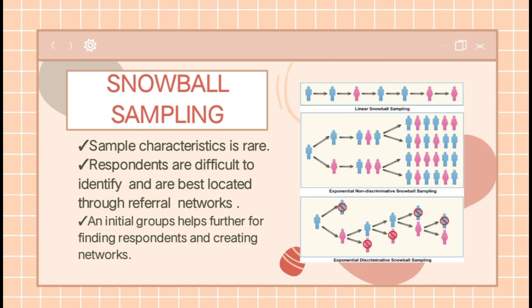Snowball Sampling, also known as Chain Referral Sampling, is a non-probability sampling method in which the samples are hard to find due to their characteristics. In this sampling technique, the existing subjects provide referrals to recruit samples required for a research study.